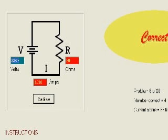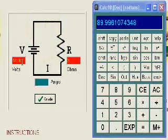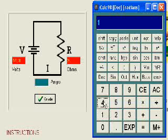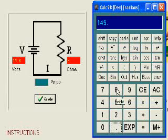Here we want to find the current. Again we use Ohm's law. Current equals voltage divided by resistance.